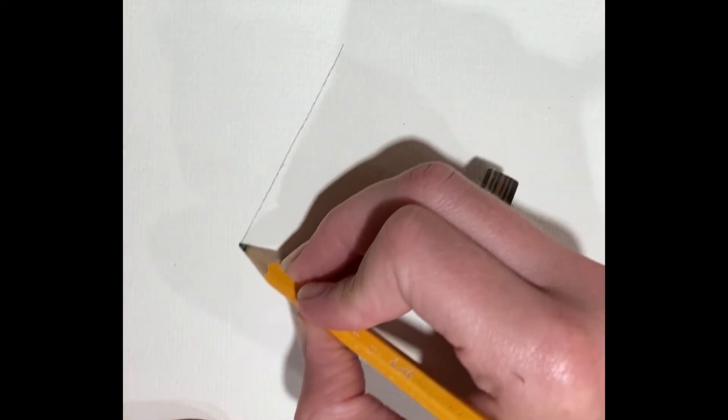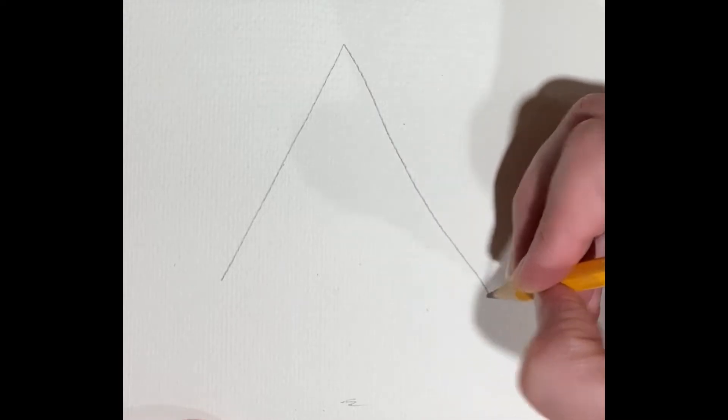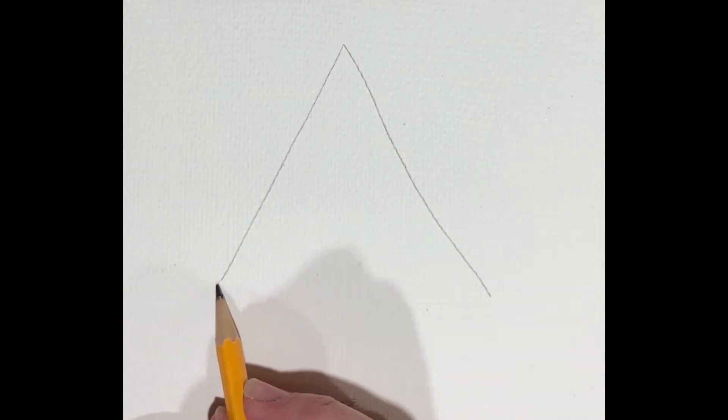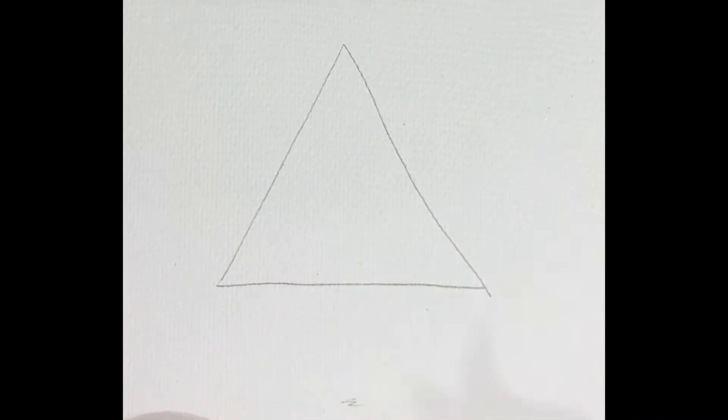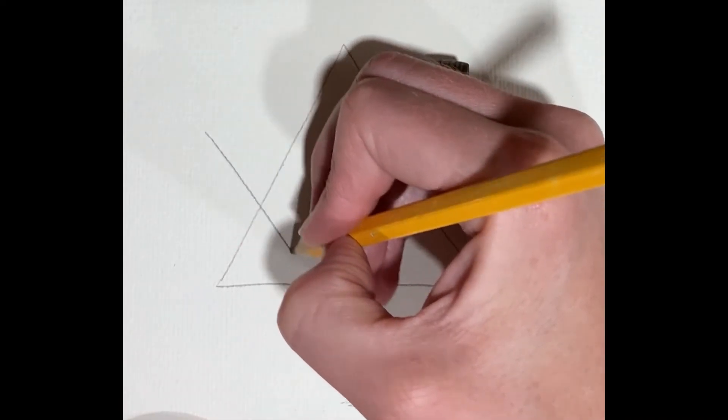I want to start out by drawing a few triangles. So I'm going to draw one large triangle right in the center, and these don't have to be perfect because they're definitely not going to be. And then I'm going to draw two more overlapping.